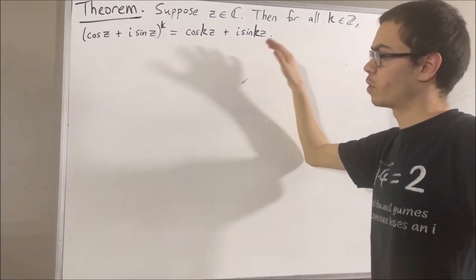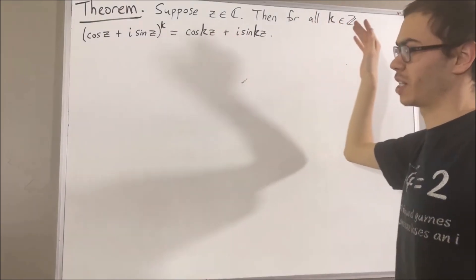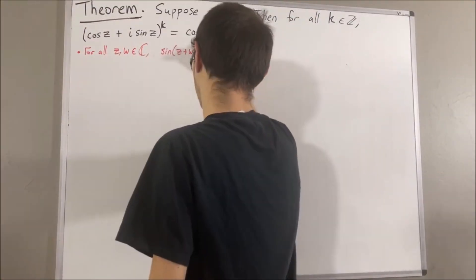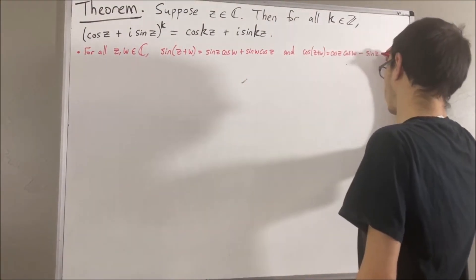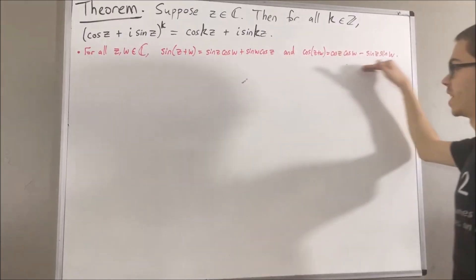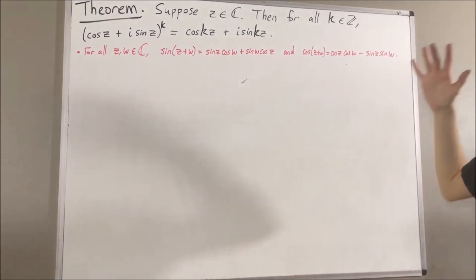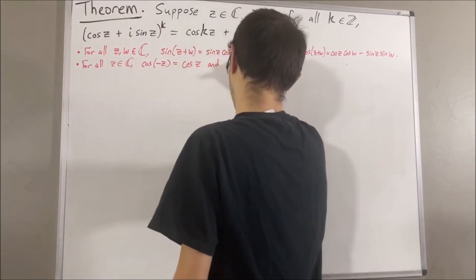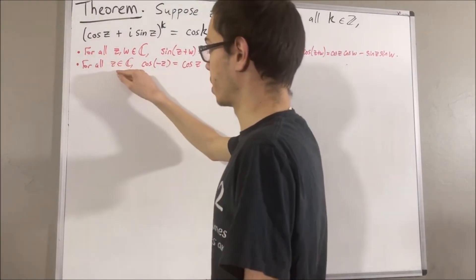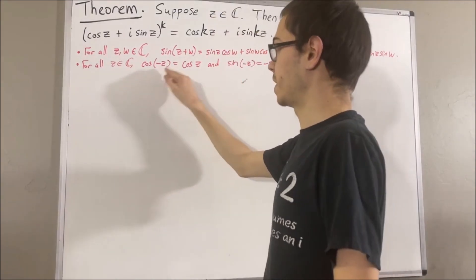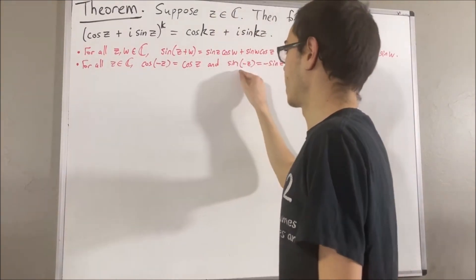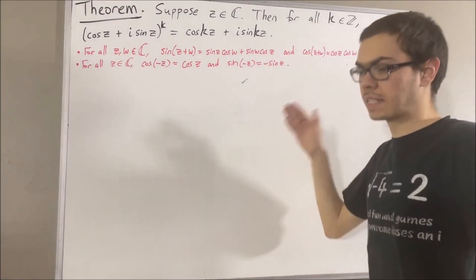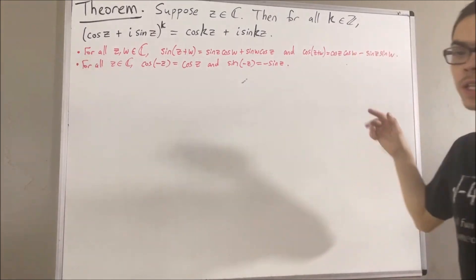Now, first of all, we have proven several properties of sine and cosine at this point. One of those properties is the addition formulas, which are these. We've also proven that cosine is an even function and sine is an odd function. In other words, for all complex numbers z, cosine of negative z is equal to cosine of z, and sine of negative z is equal to negative sine of z. We've also proven the property sine squared plus cosine squared is equal to 1.